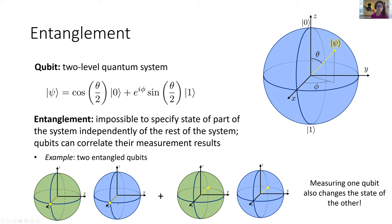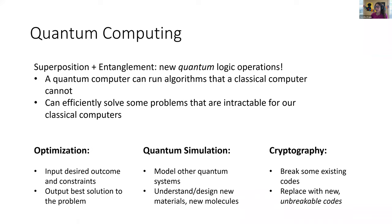The essential idea behind quantum computing is these two new concepts: quantum two-level systems that can be in superposition, and entanglement allowing multiple qubits to correlate their measurement outcomes. While a classical computer has a set of logic operations mapping inputs to outputs, a quantum computer has a richer set of logic operations, which means a broader set of possible algorithms. A quantum computer can do any classical algorithm, but can also use different logic operations that might solve certain problems more efficiently.